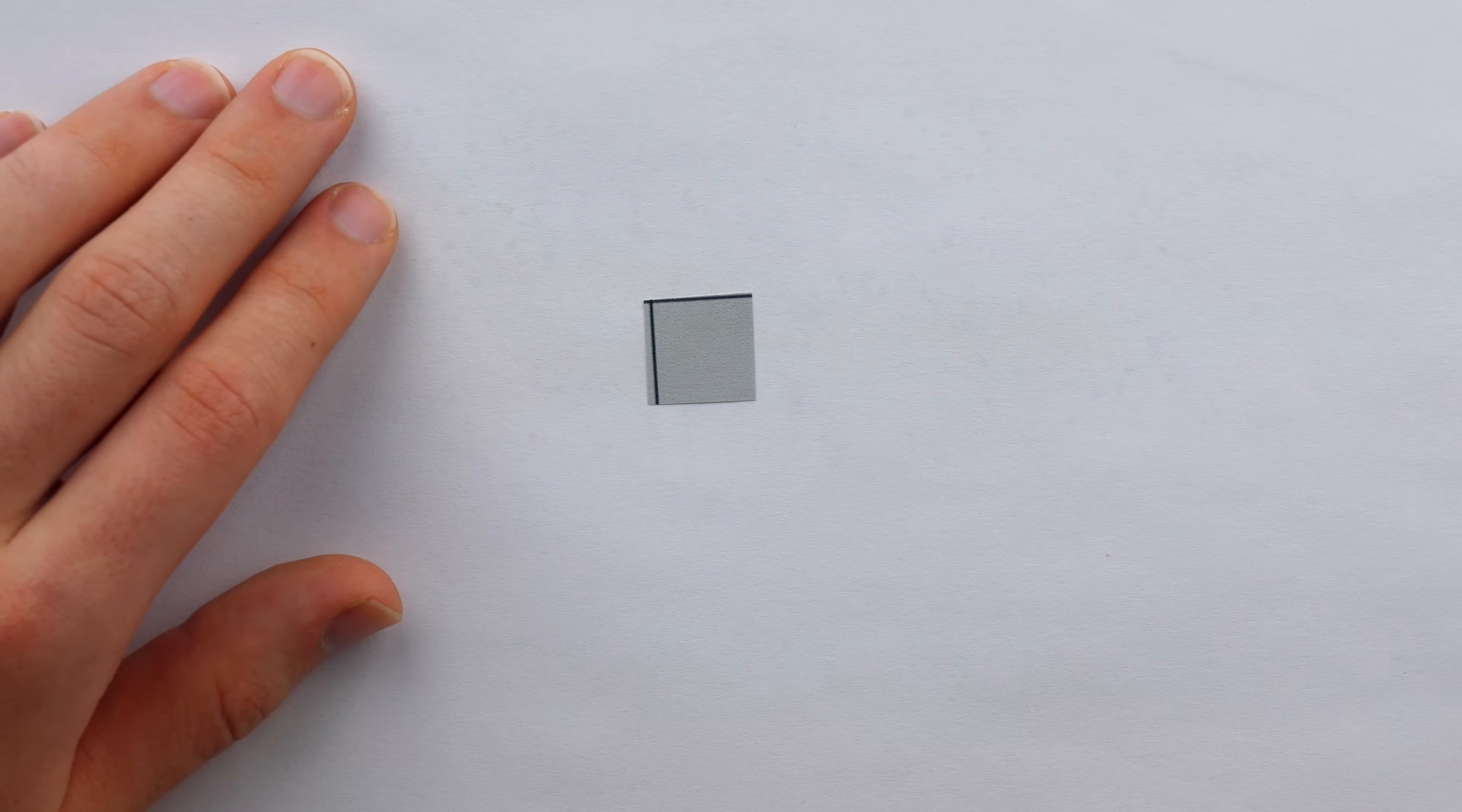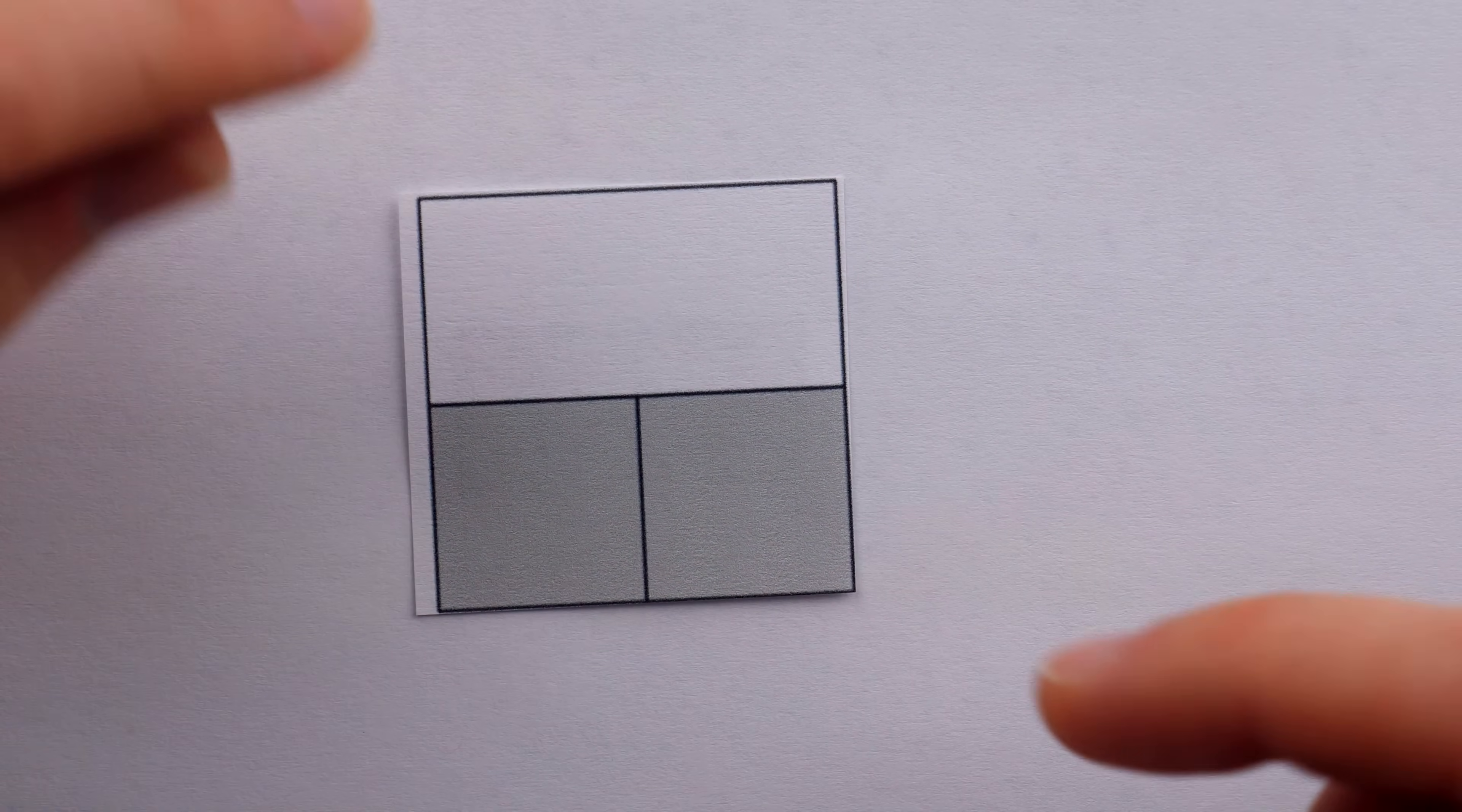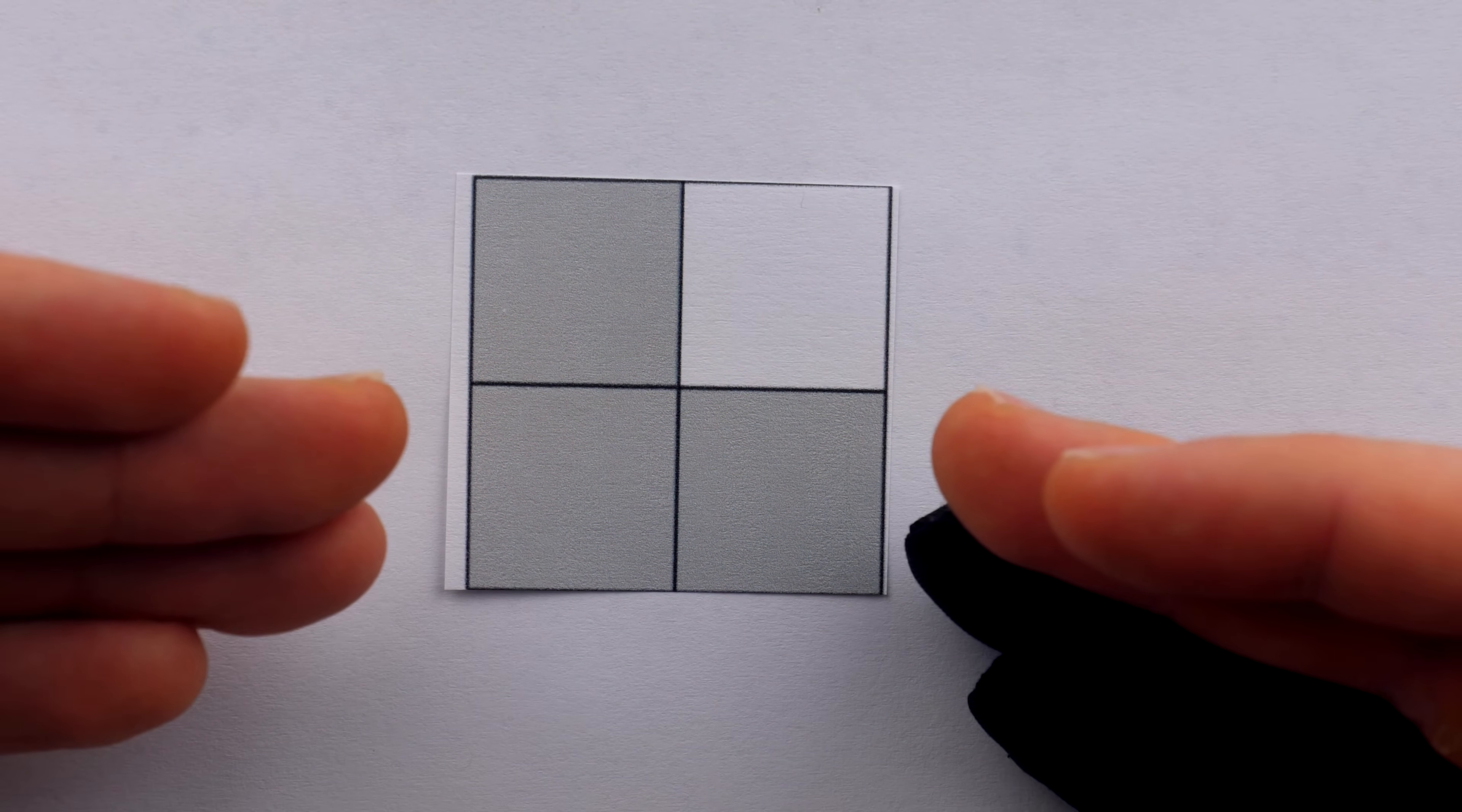It comes from asking what the best way would be to pack a number of unit squares together. If I have a single square, the most efficient way to pack it is trivial. What if we have two squares? Well then, the most efficient way to pack them is to just put them side by side. With a containing square of side length two, you can also pack three squares.